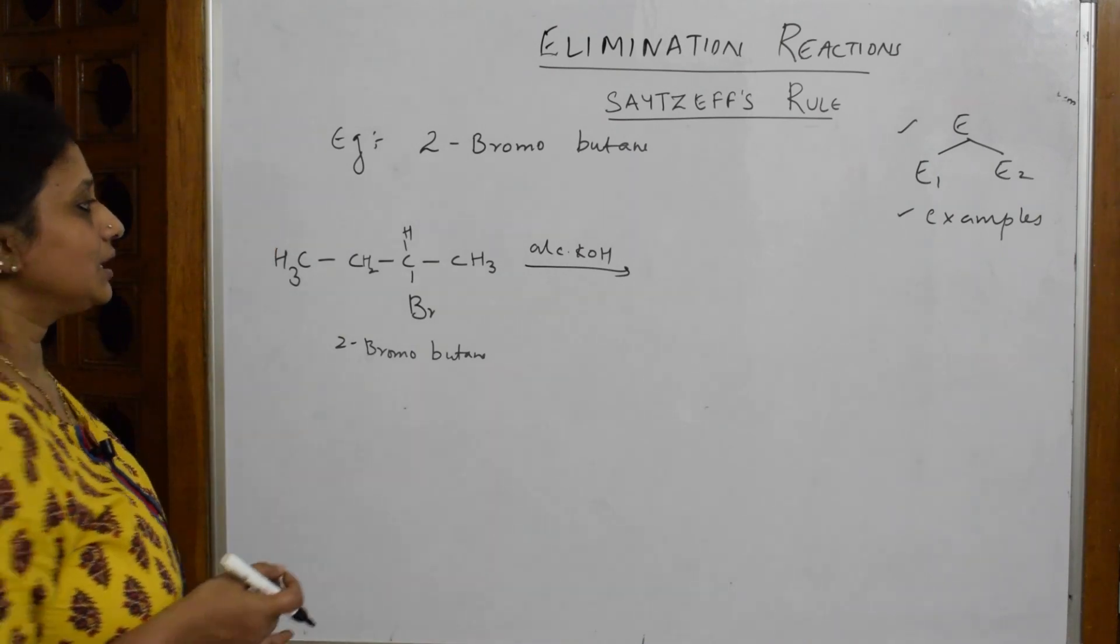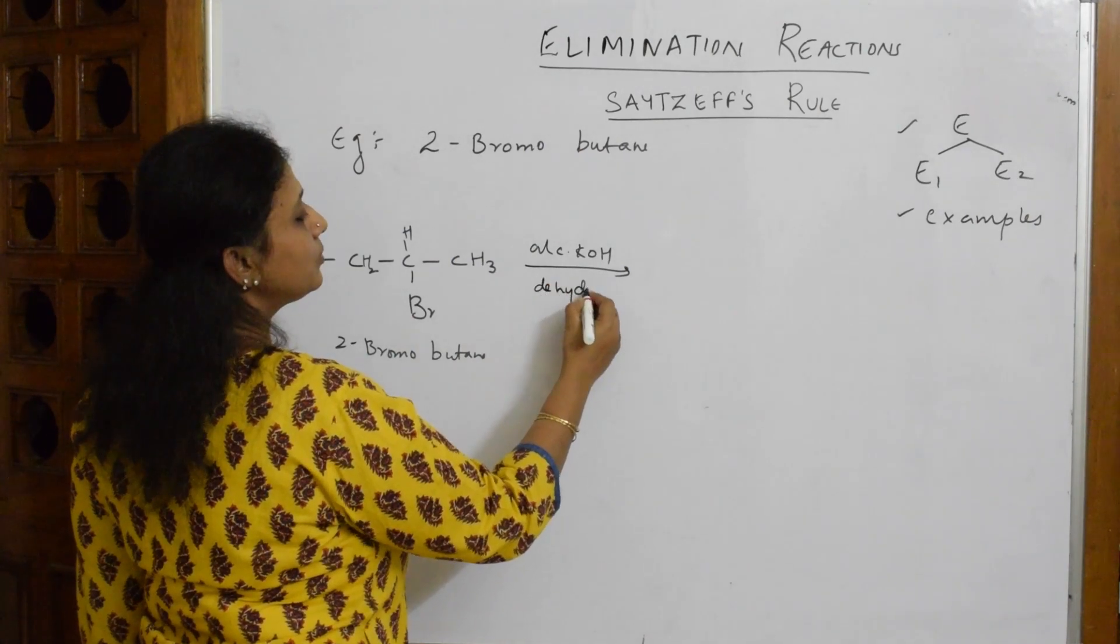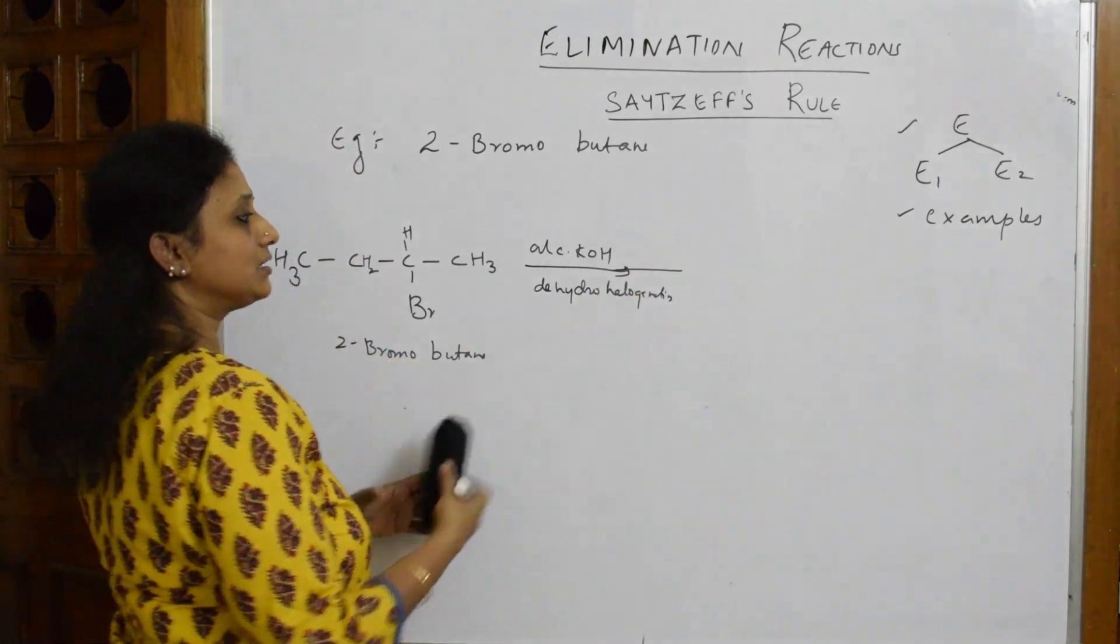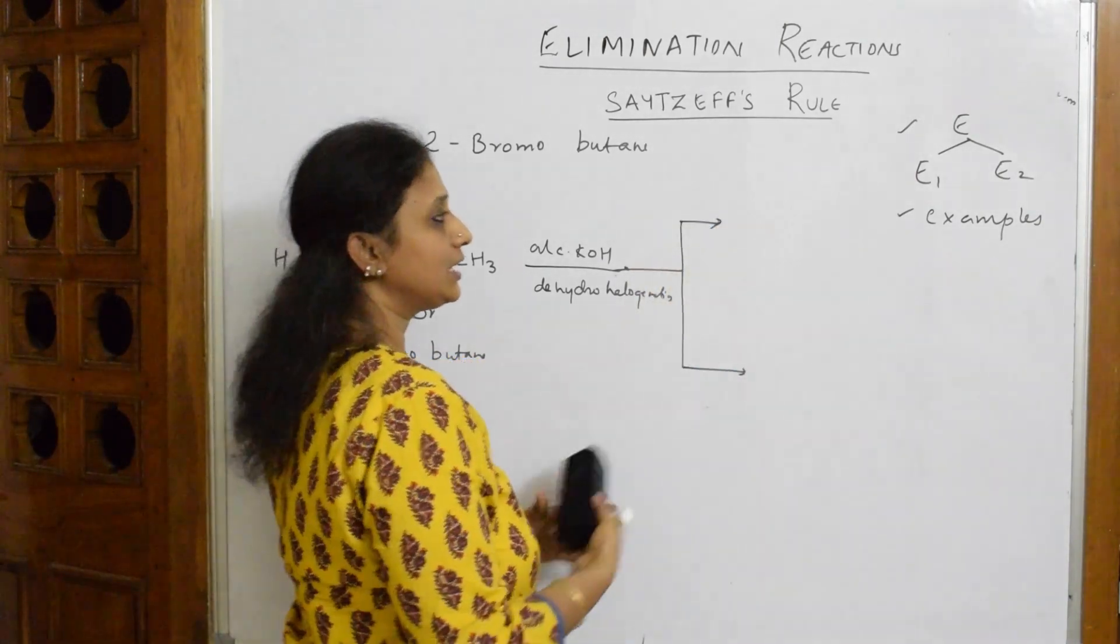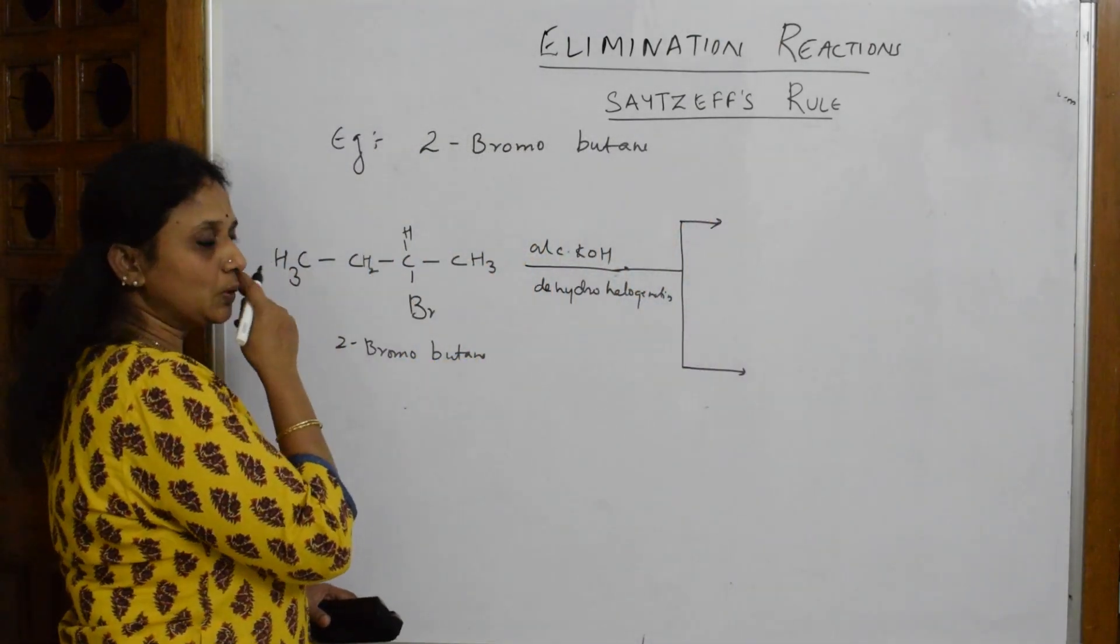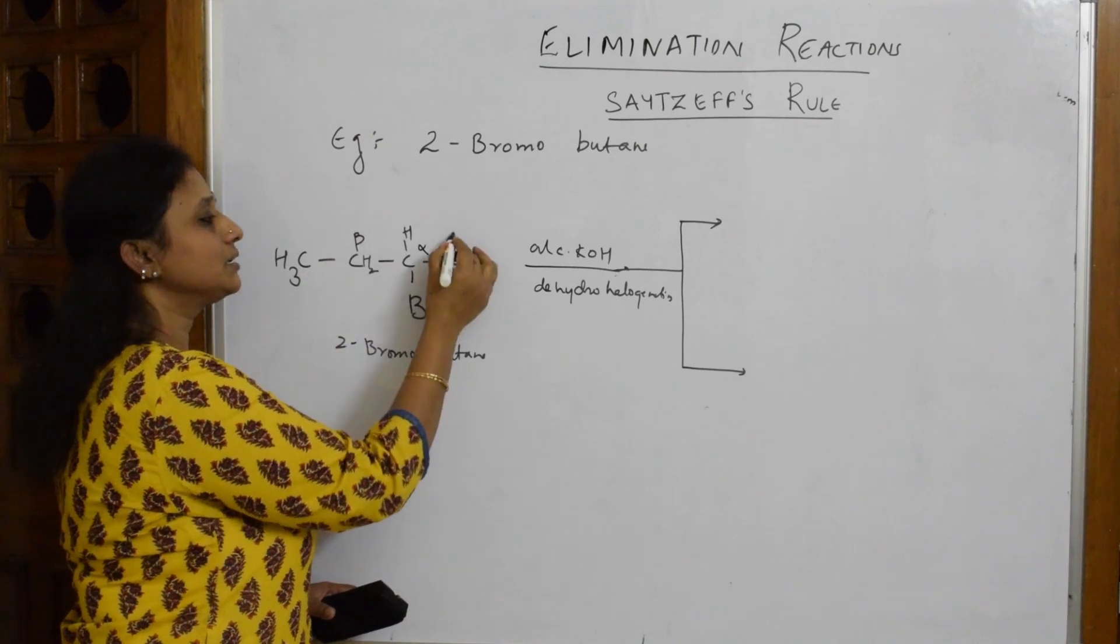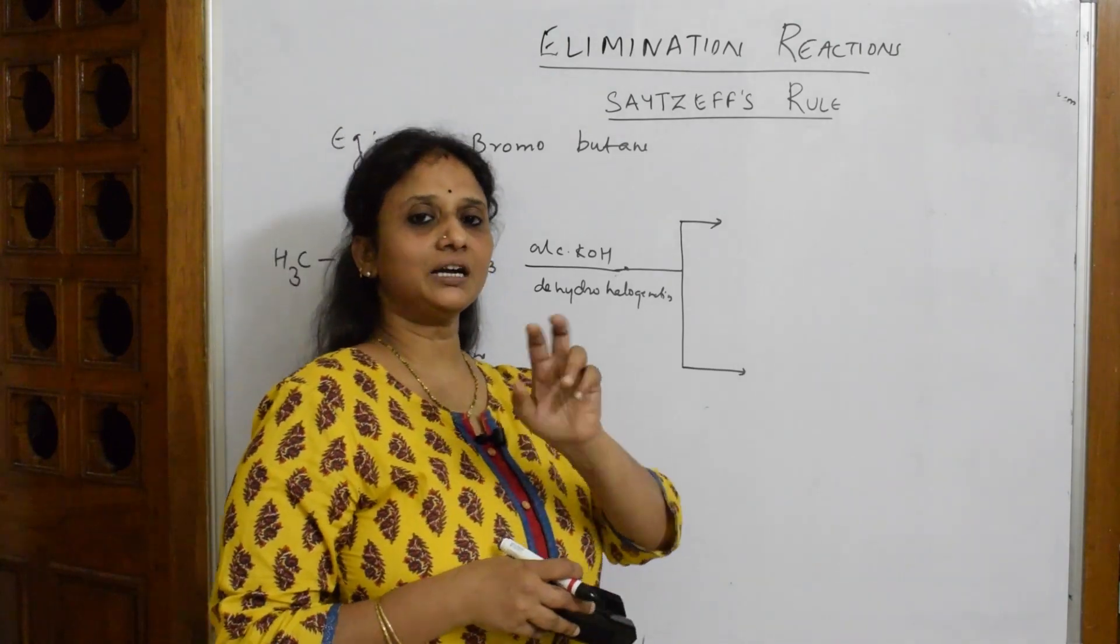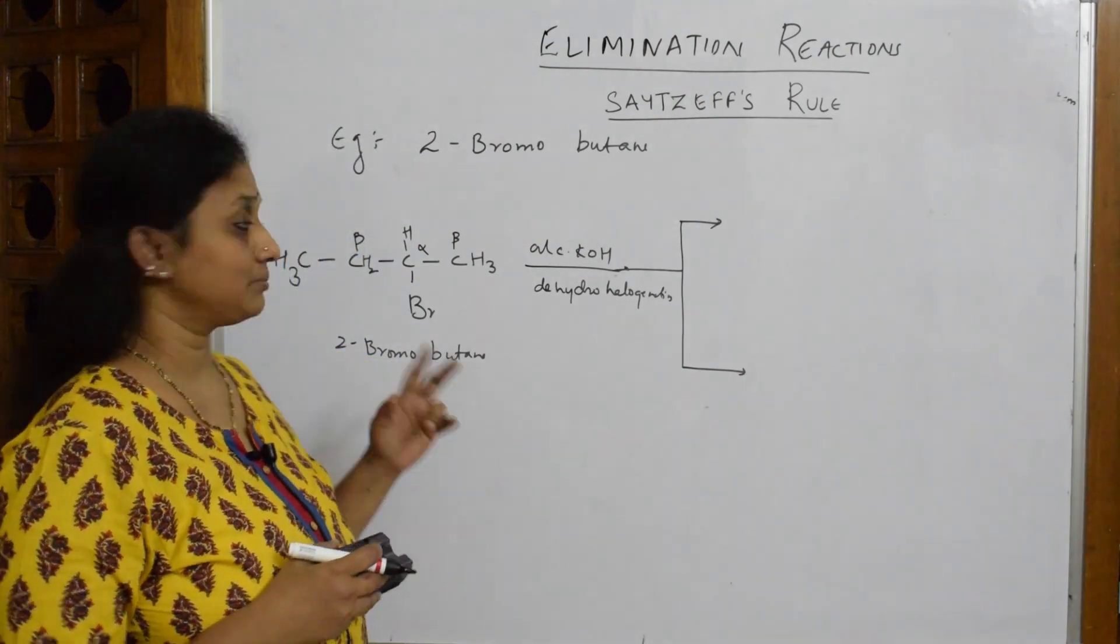When I take this particular example, I'm going to get two products. Now, as soon as I do beta elimination, take your pen and write: this is alpha carbon, this is beta carbon, this is also beta carbon. What is the difference? In the earlier example, I had alpha and beta adjacent - not a problem, I just got an alkene. But here, when you have two beta carbons adjacent, what should you do?